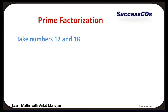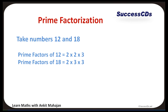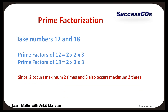In the Prime Factorization method for LCM, take numbers 12 and 18. Prime factors of 12 are 2, 2, and 3. Prime factors of 18 are 2, 3, and 3. We look at how many times each factor occurs at maximum. Factor 2 occurs maximum 2 times, and factor 3 also occurs maximum 2 times. Therefore LCM is 2 x 2 x 3 x 3, which equals 36.